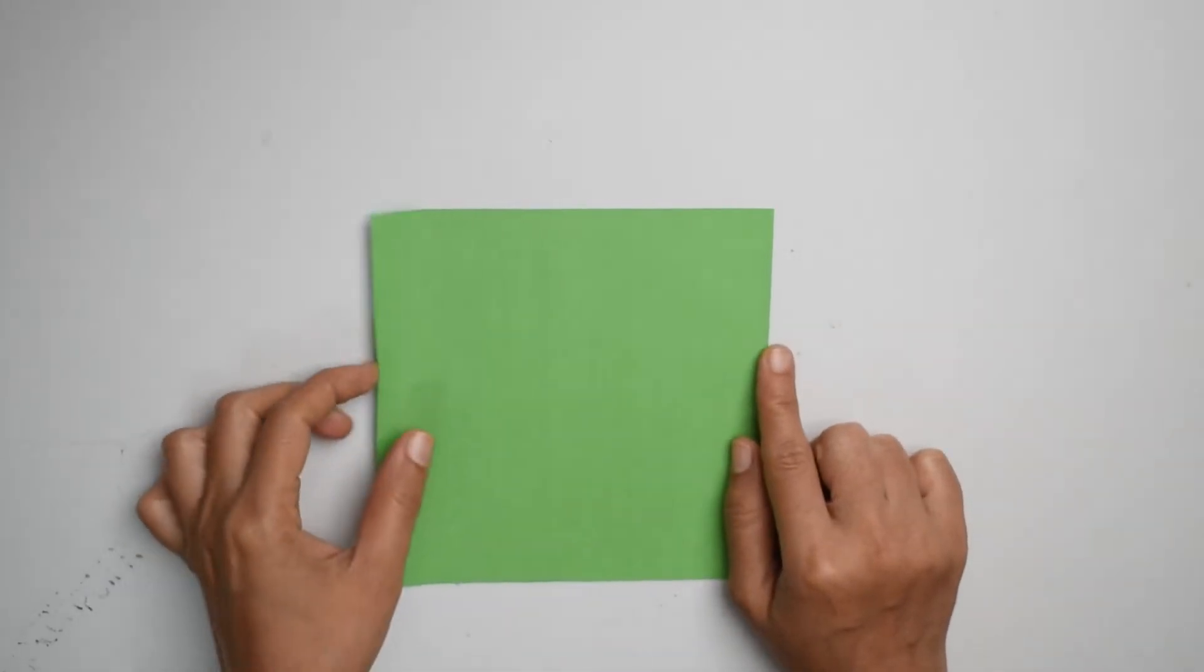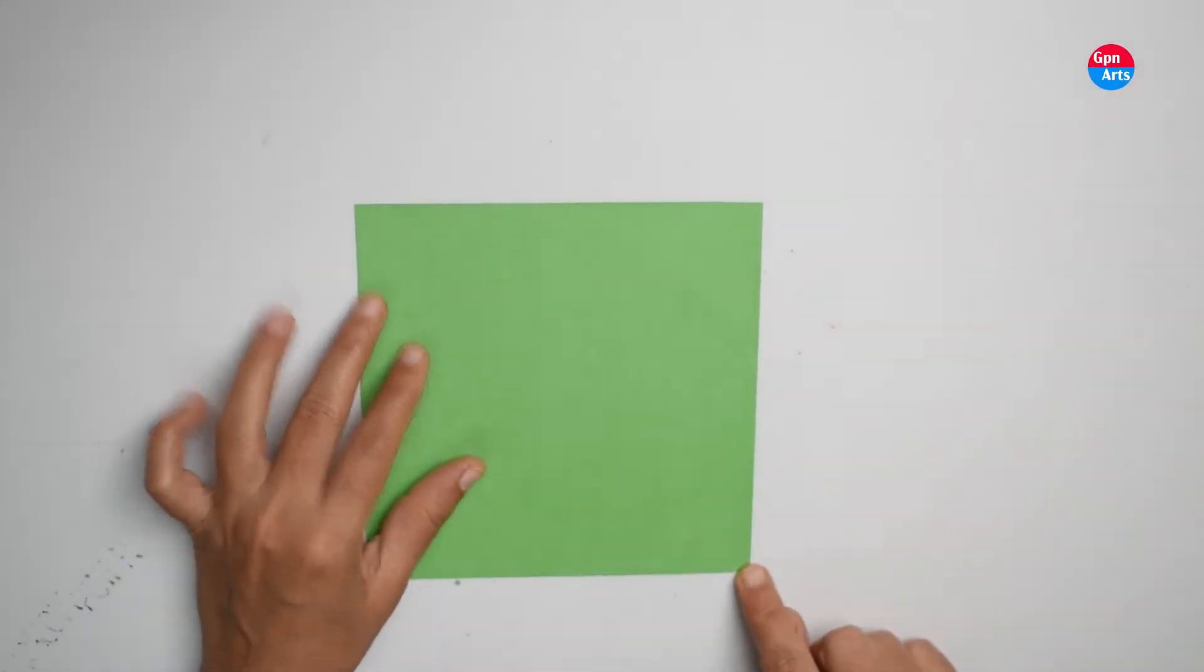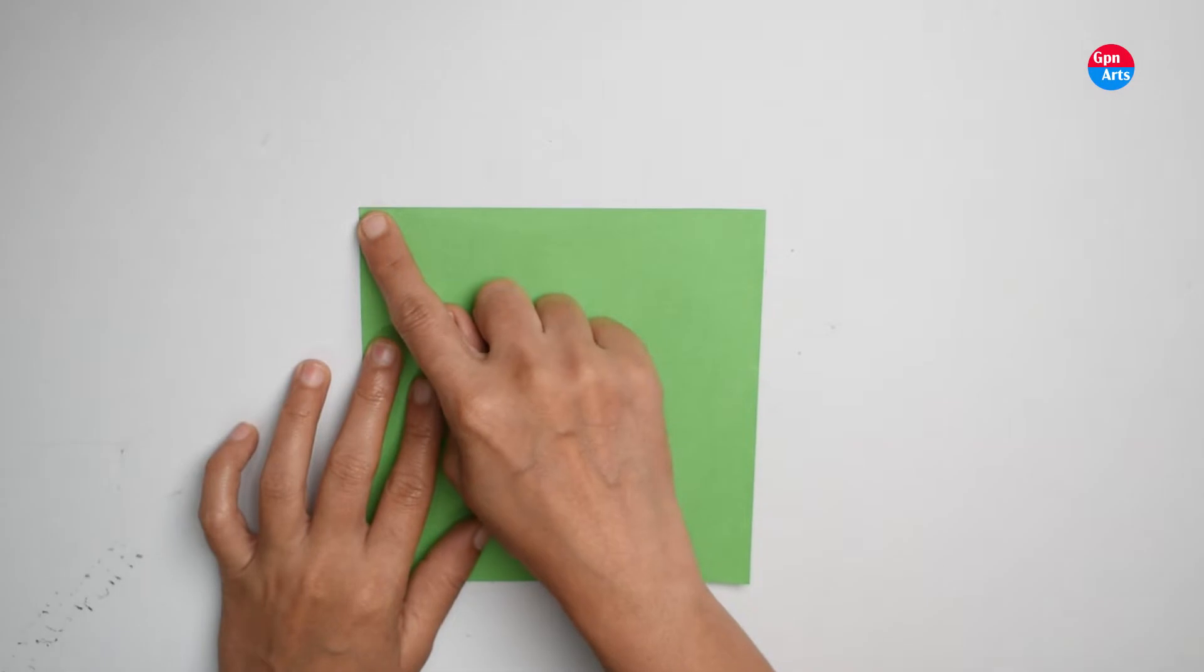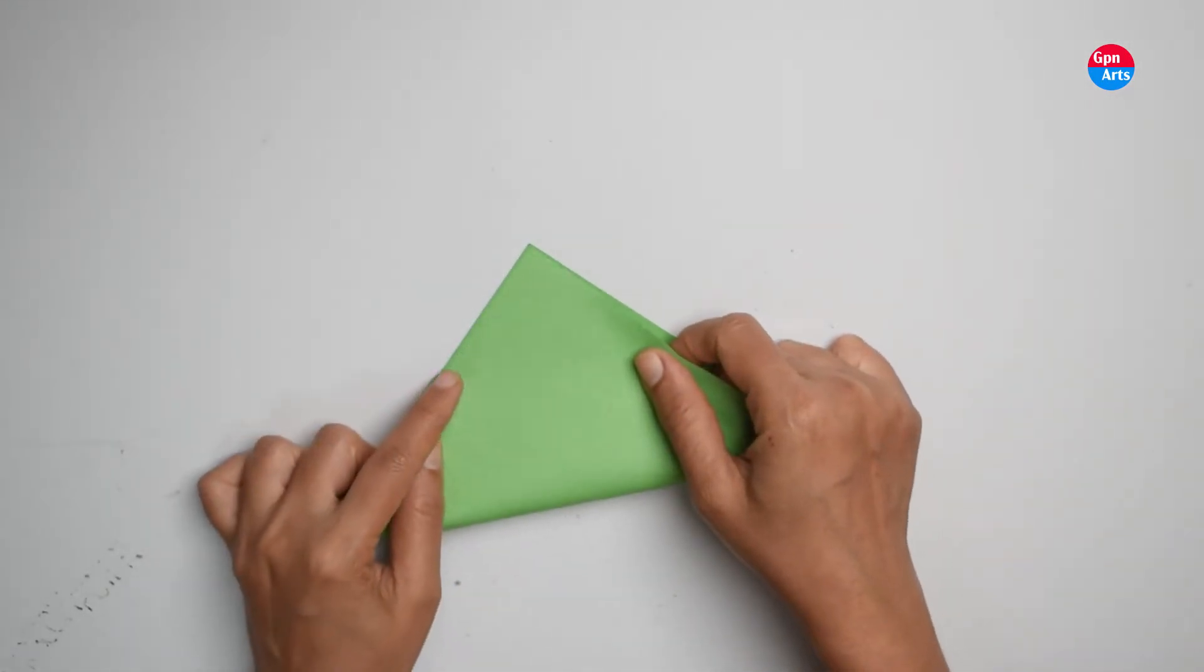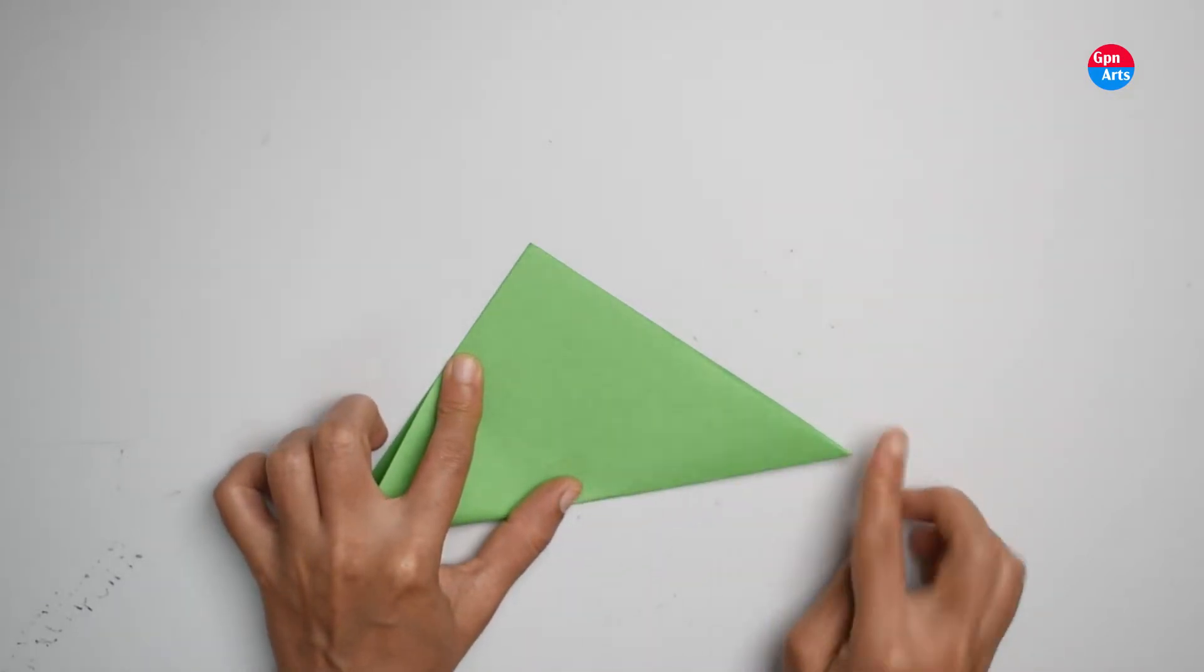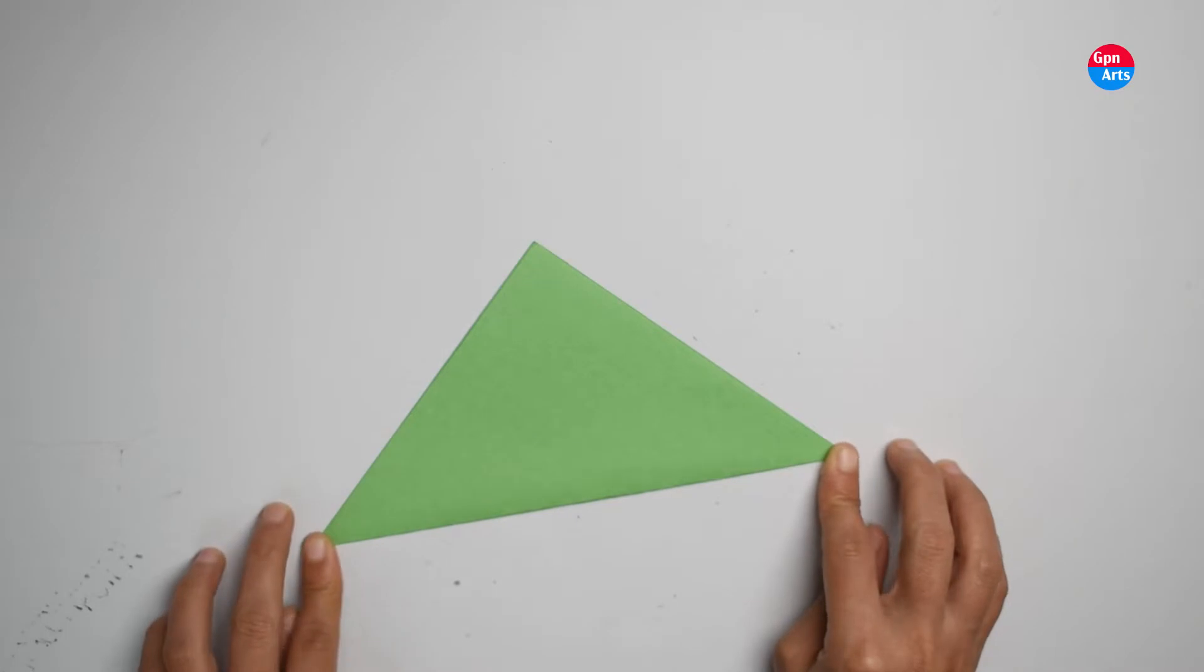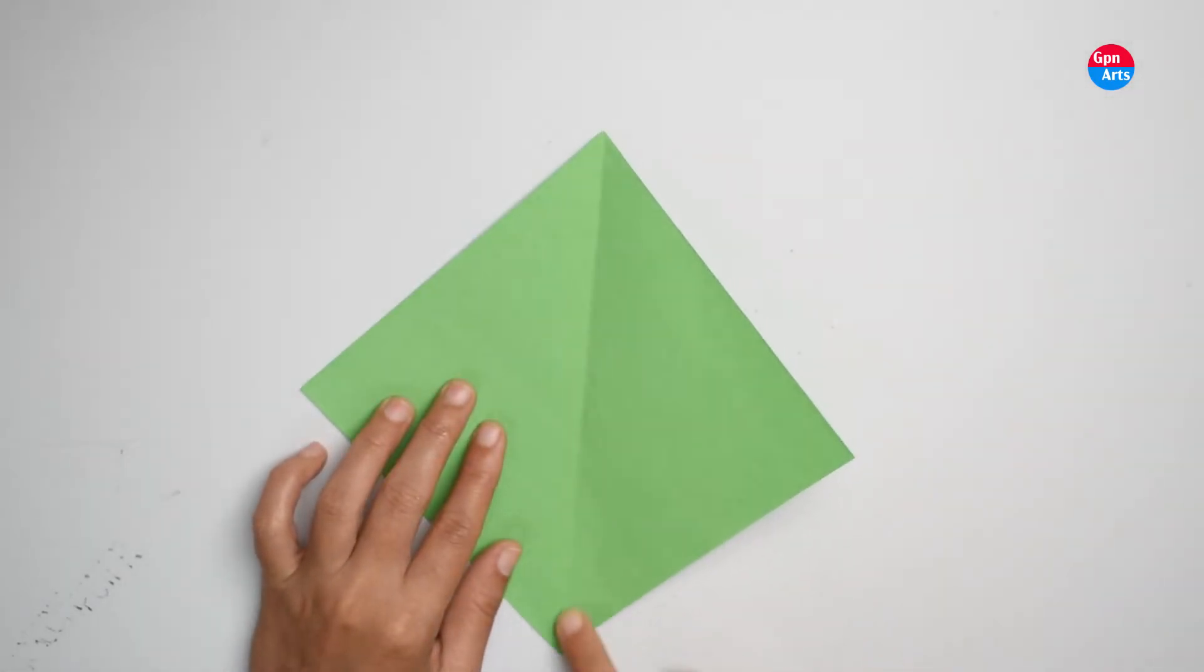First, take one square paper. Put these two corners on each other and press it. Now open the paper. Now we have one line here.